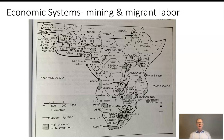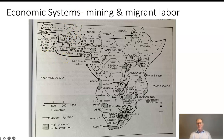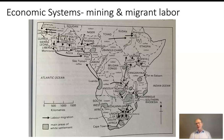As Guerrera talks about regarding the Sudan region — what would become Upper Volta — there's nothing you can grow there that the French want, and transport costs to get it to the coast would eat up any profits. So as Guerrera describes, you have labor migration: people in these areas are being taxed but can't produce exportable crops, so they have to move somewhere where they can either grow crops or work on a plantation.